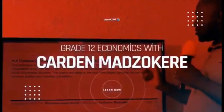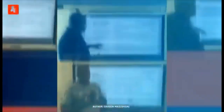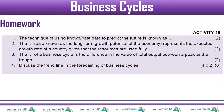As usual we start with our homework. Number one: the technique of using past or known data to predict the future is known as extrapolation. Number two: the trend line represents the expected growth rate of a country given that resources are fully used — it gives us the general direction in which our economy is heading.